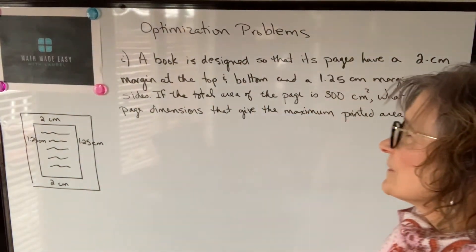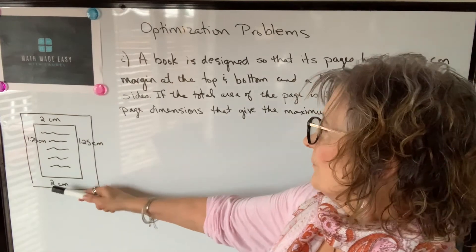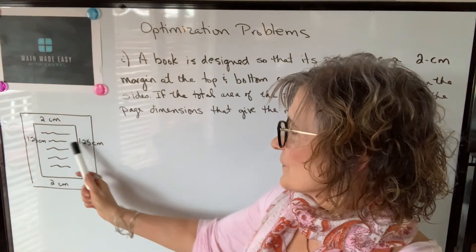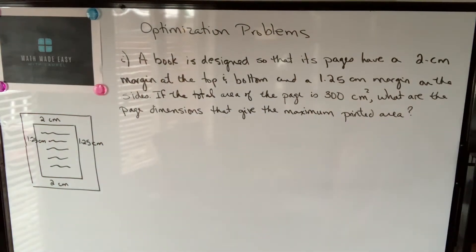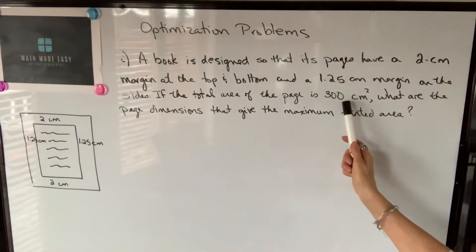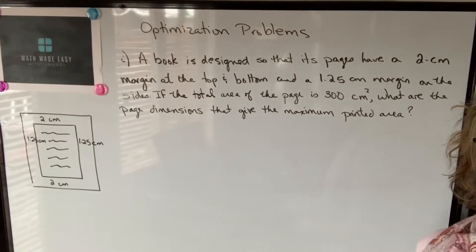So the first problem says a book is designed so that its pages have a 2 cm margin at the top and at the bottom and a 1.25 cm margin on each side. If the total area of the page, so the whole page, is 300 square centimeters,